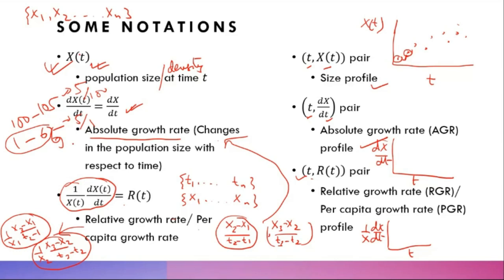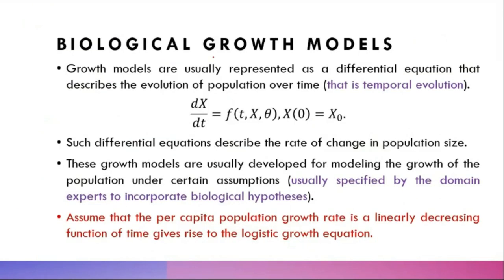The size profile, absolute growth rate, and relative growth rate are three very important concepts in statistical inference on biological growth models. Many from the mathematical biology domain are well versed in these equations, but here we are integrating those equations with data to understand what the data is telling us. These three plots form the primary conceptual framework.